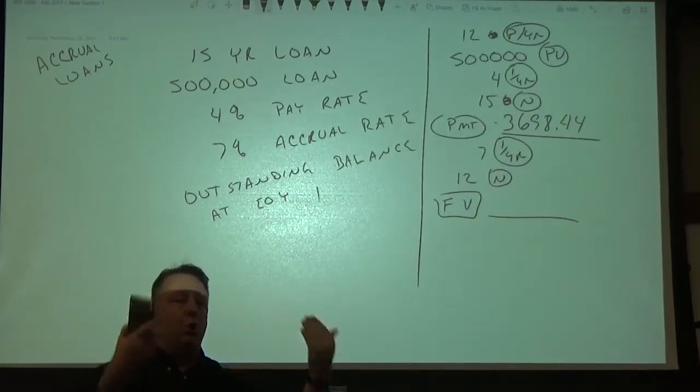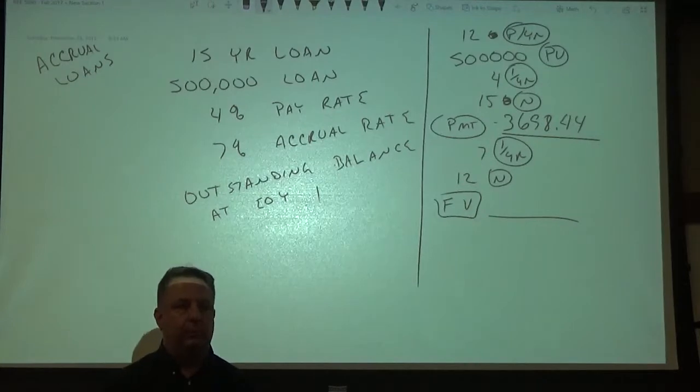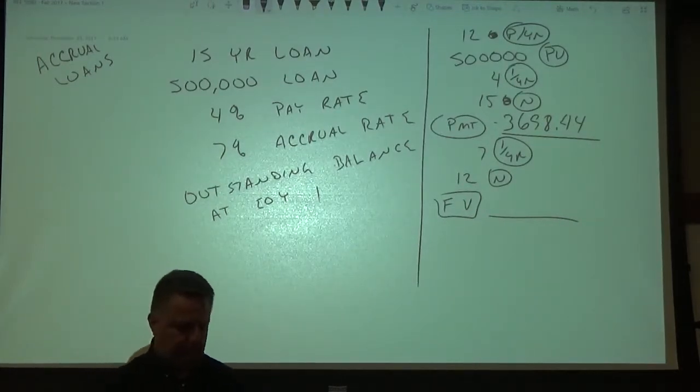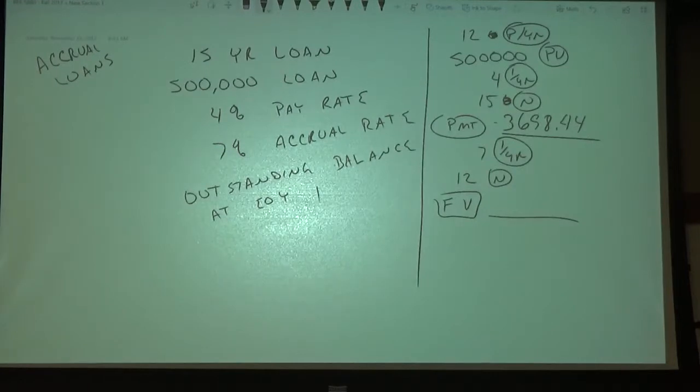So you're going to owe more at the end of the year than what you probably borrowed simply because you haven't been paying down enough. Okay, so in my mind I'm thinking that year 2 rate is going to be 4% times 1.07. No, no, no.